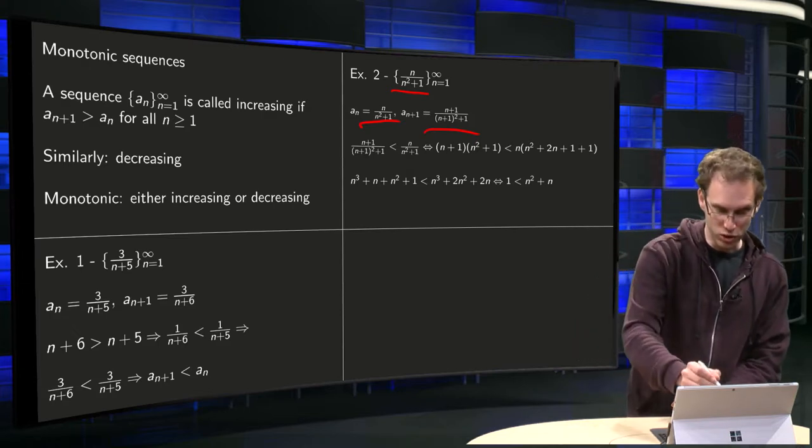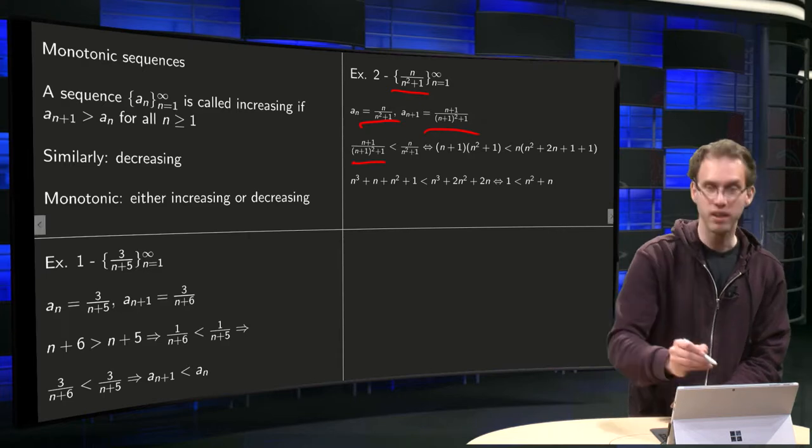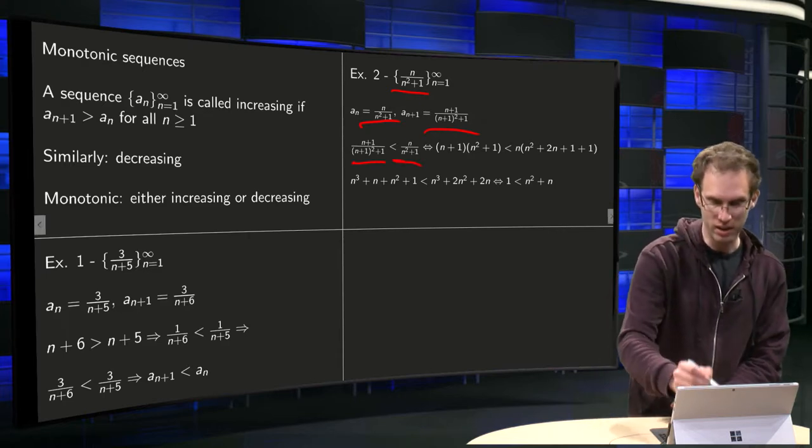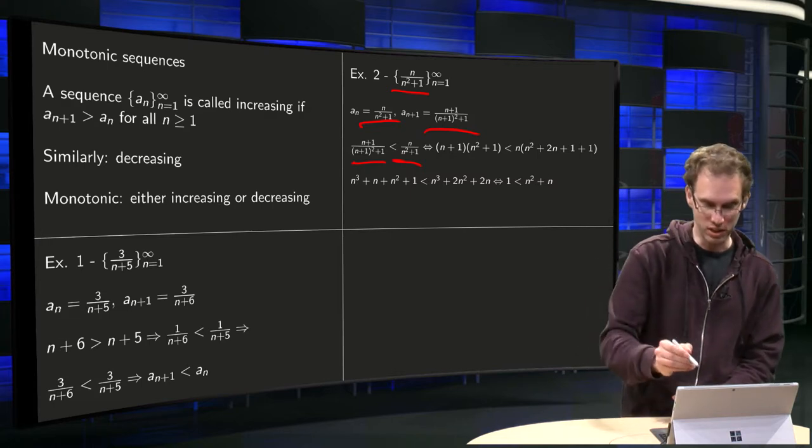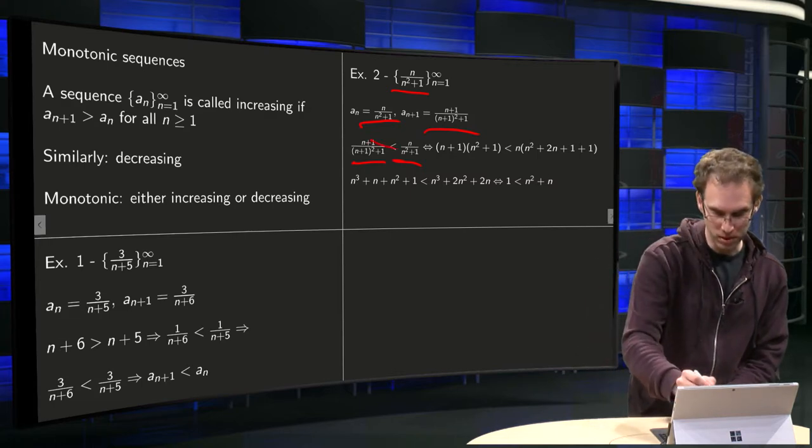And then we have to show, because we expect that An+1 is smaller than An, well that's equivalent by cross multiplication to, so cross multiply here and here.